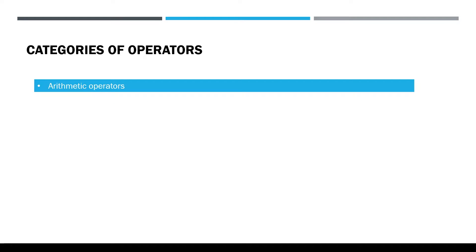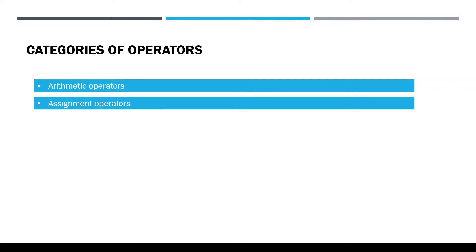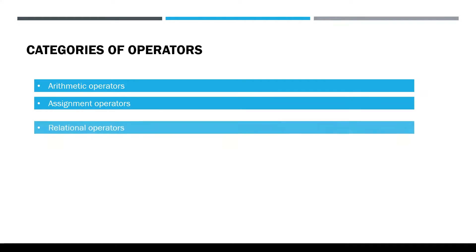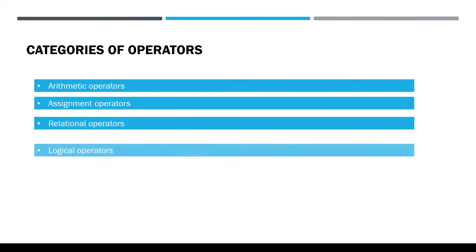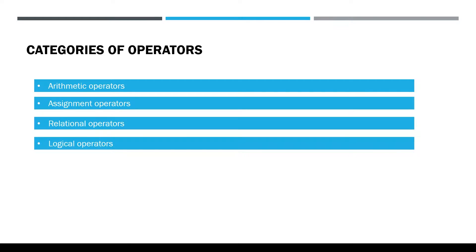Here are some of the most common categories of operators. First is arithmetic operators, second are assignment operators, third one is relational operators, and fourth one is logical operators. Now let's take a look at some of the most common operators that we use from each category.